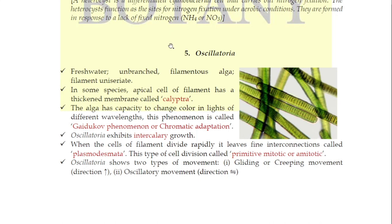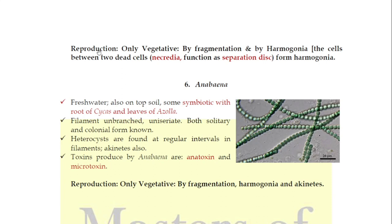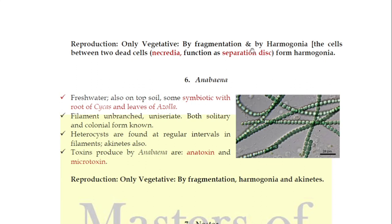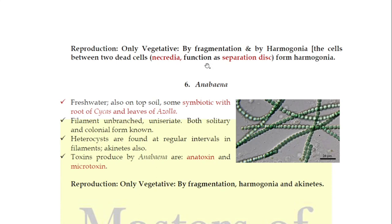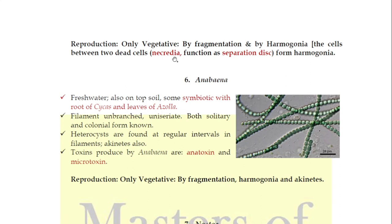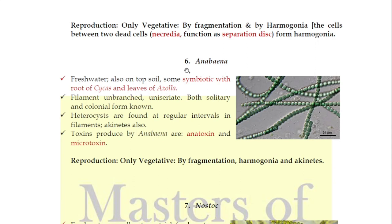In gliding movement, motion is straightforward. Regarding reproduction in Oscillatoria: just as in other cyanobacteria, there is no sexual reproduction. It is a multicellular structure. When a cell in the filament dies here and another dies there, the middle structure forms hormogonia. The two dead cells are called necridia, which act as separation discs. The filament breaks, and the hormogonia is released to form a new Oscillatoria filament.